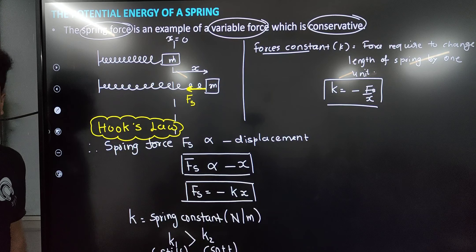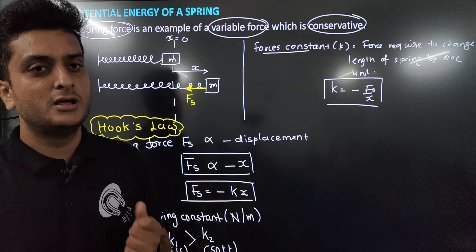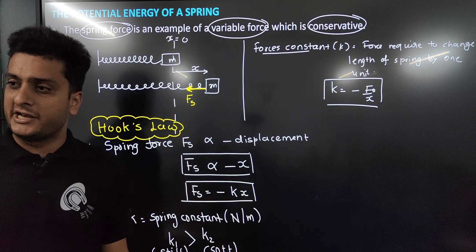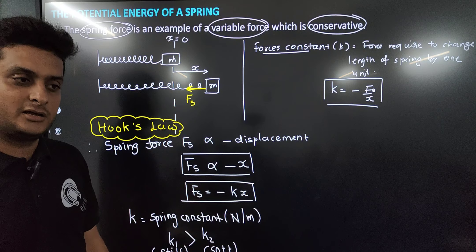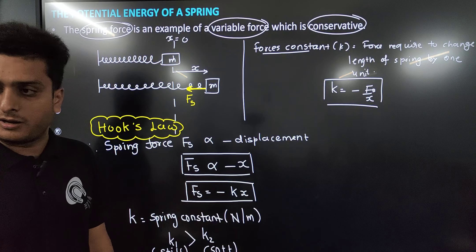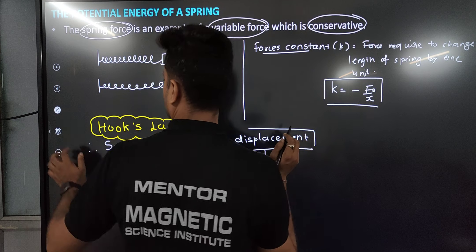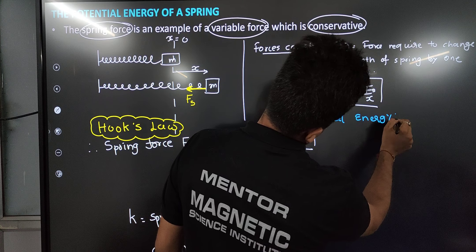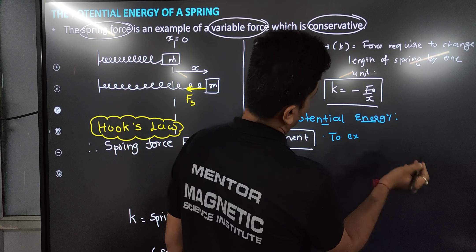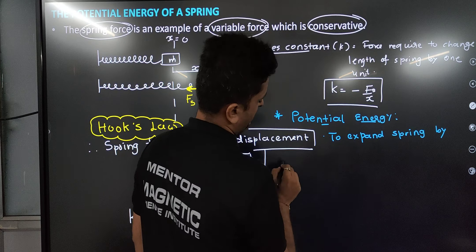Now what we want to find is the energy stored. Before energy, we described the spring force — it is directly proportional to x and in the opposite direction. If you want to stretch the spring a little more by dx, you have to do work against the spring force Fs. Now let's talk about the potential energy.